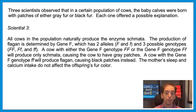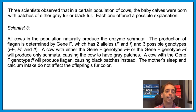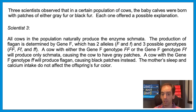Scientist 3. All cows in the population naturally produce the enzyme schmata. The production of phlegon is determined by gene F, which has two alleles — big F and little f — and three possible genotypes: FF, Ff, and ff. A cow with either genotype FF or Ff will produce only schmata, causing the cow to have gray patches. A cow with genotype ff will produce phlegon, causing black patches instead. The mother's sleep and calcium intake do not affect the offspring's fur color. I'm making up silly words for the enzymes, but take a minute and see if you can translate all of that information into some sort of visual chart. Press pause and give it a shot.